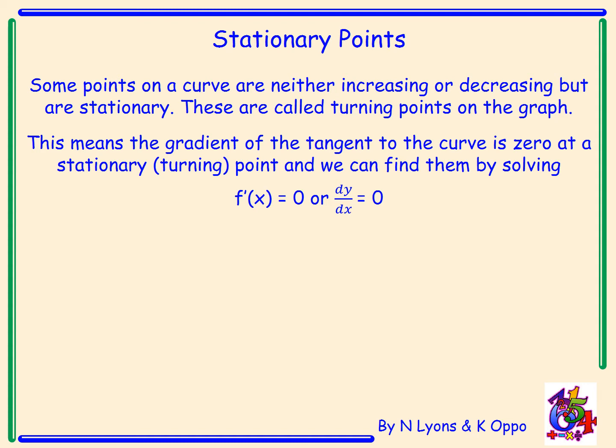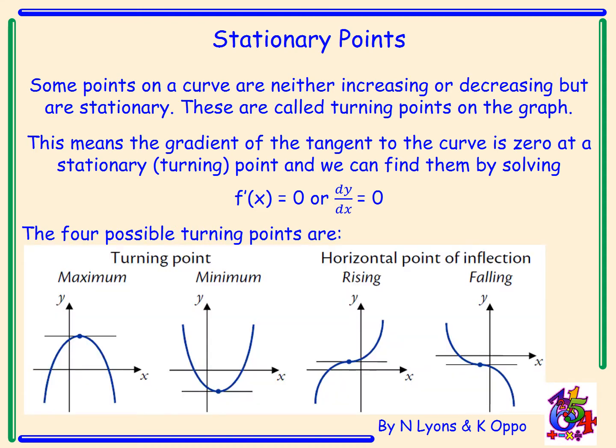The gradient of the tangent to the curve is zero at a turning point. We can find the coordinates of the turning points by solving the derivative of the curve's equation equal to zero. There are four possible turning points: a maximum turning point, a minimum turning point, a rising point of inflection, and a falling point of inflection.